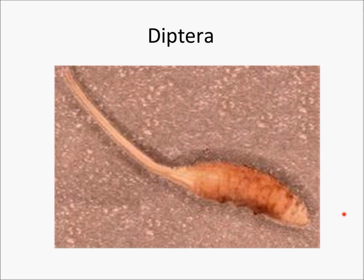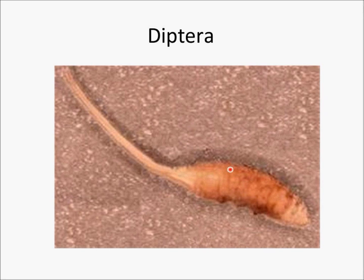Here's our final example of Diptera — the head is here, and we see a long breathing tube with two little spiracles at the tip for breathing. These animals are often found in muddy, mucky, or very nutrient-rich sediments, or in sewage tailings. That concludes the talk today. I hope this helps folks when they're out doing fieldwork to identify some of the critters while collecting them and get to know them better. Thank you.